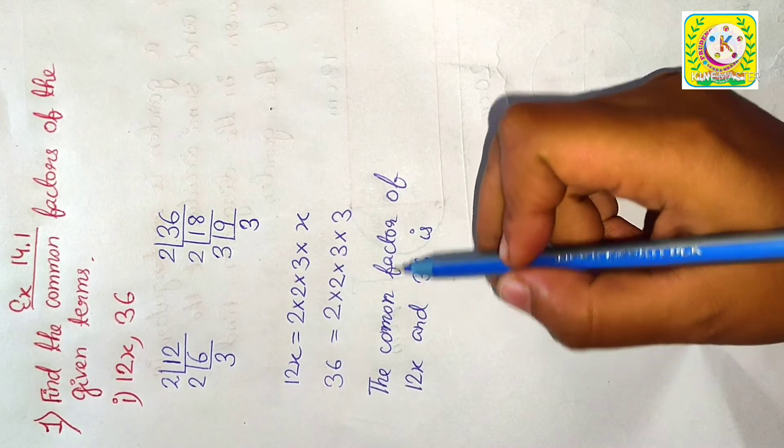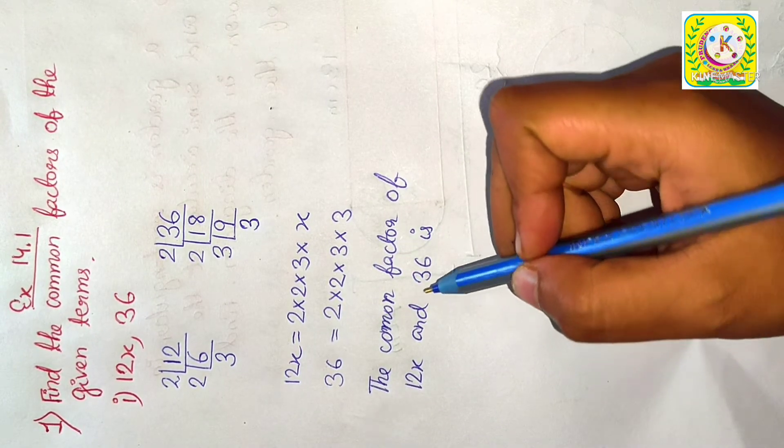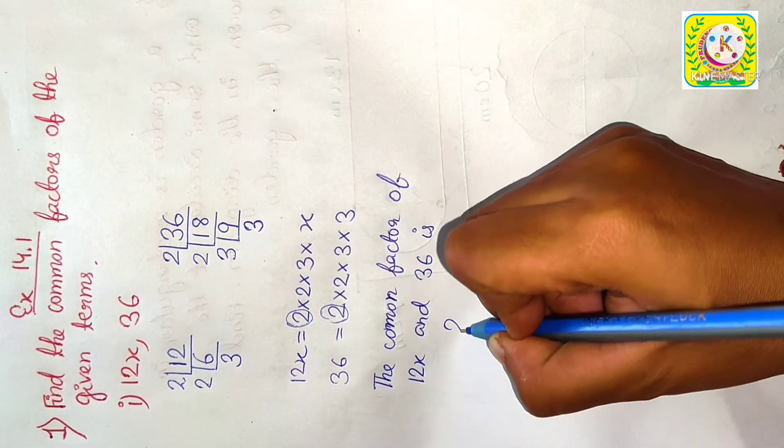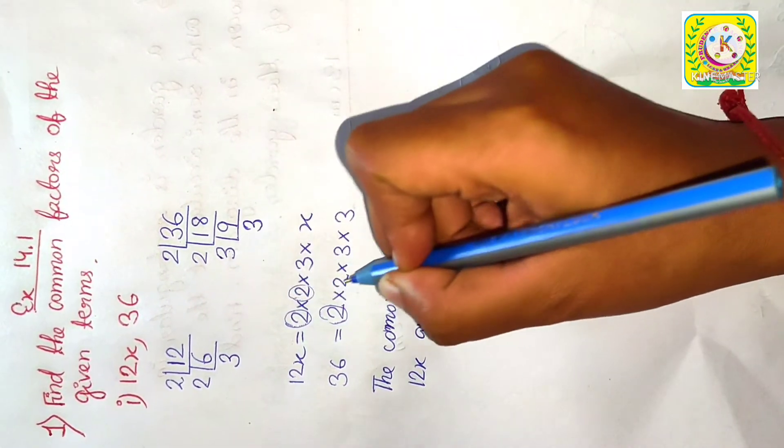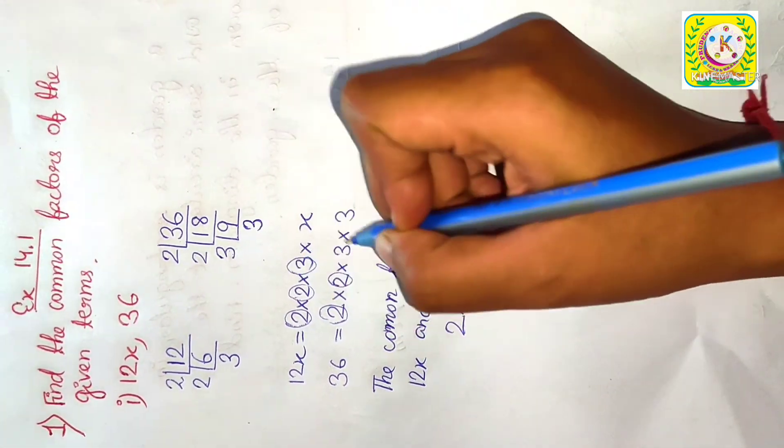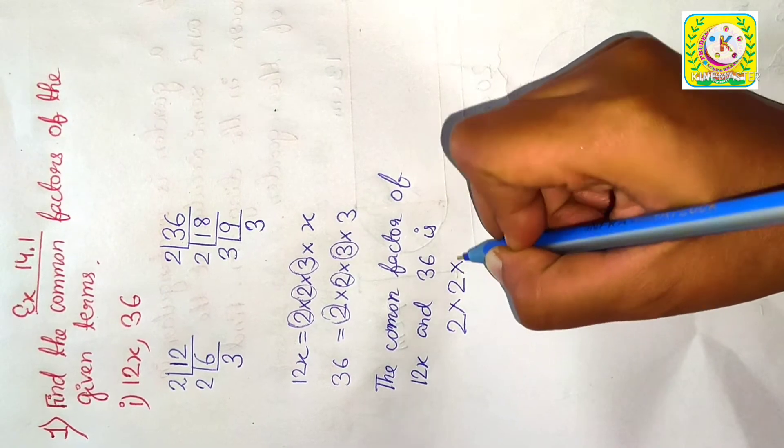Now, we need to write the common factors of 12x and 36. Here, we have 2 in 12x; here also we have 2. So, we will write 2 first. Here we have another 2, here also 2. So, 2 into 2. Here, we have one 3, here one 3. So, into 3.